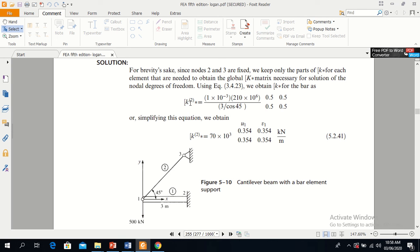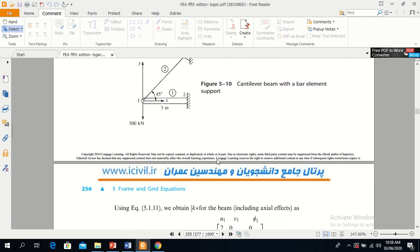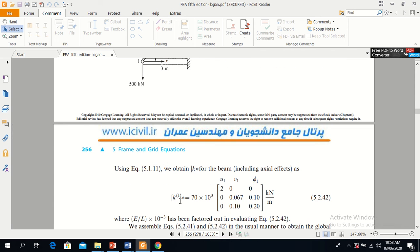You can see that this is the stiffness matrix for element 2, and it has considered only node 1 and has not considered node 3 because it is fixed. Then we will find the stiffness matrix for element 1.